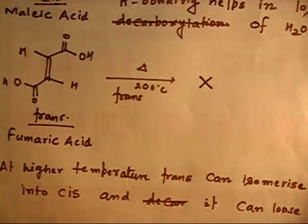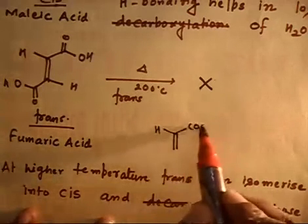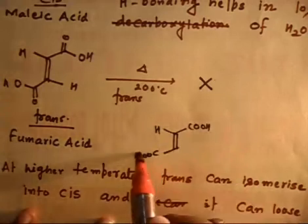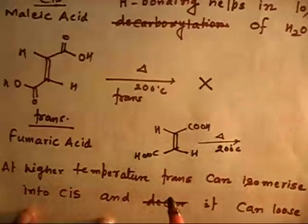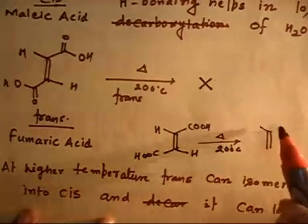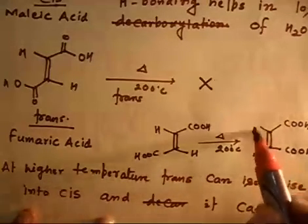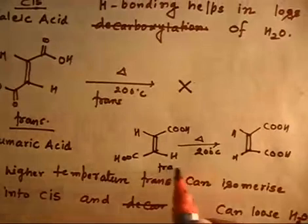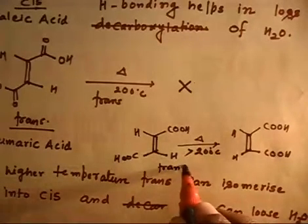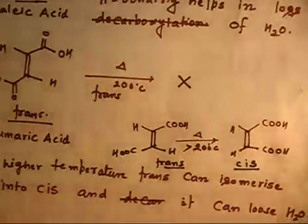But if you heat at higher temperature, what happens? The trans isomer can isomerize into the cis isomer. So if you heat at very high temperature — greater than 200 degrees centigrade — the COOH and hydrogen rearrange, and you see the trans form isomerizes to the cis form. So at greater than 200 degrees centigrade, trans isomerizes to cis form.